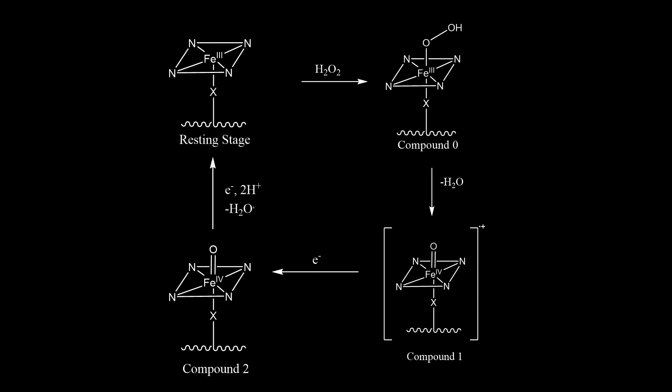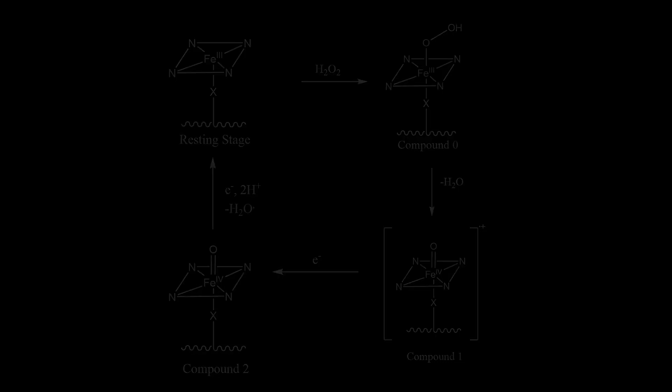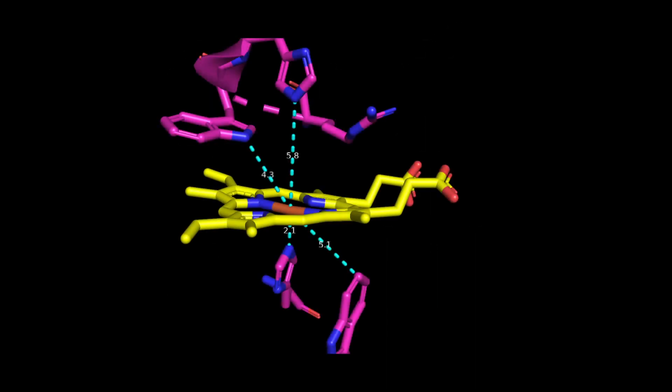Each step of this cycle will be explained in detail now. The iron center has its axial ligand as histidine 175 of the protein chain. The other amino acid side chains in the active center include histidine 52, arginine 48, and tryptophan 191.